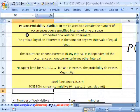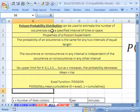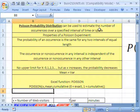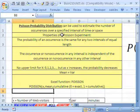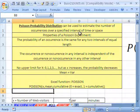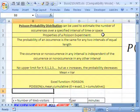One last distribution, the Poisson probability distribution. This can be used to estimate the number of occurrences over a specified interval of time or space. It's like, in the next hour, how many calls are going to come into a call center?